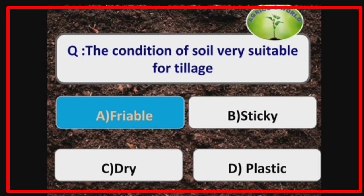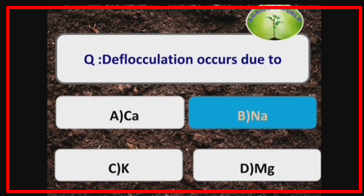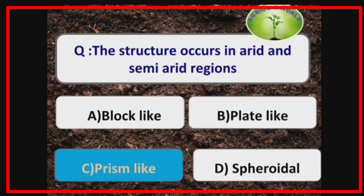The condition of soil very suitable for tillage is friability. Deflocculation occurs due to sodium, whereas flocculation occurs due to calcium.